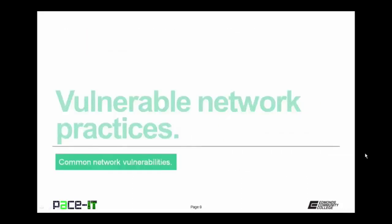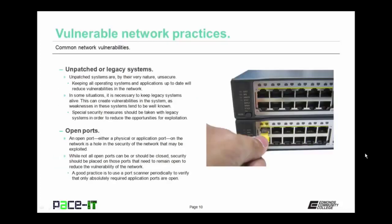Now it's time to talk about vulnerable network practices. First up are unpatched or legacy systems. Unpatched systems are, by their very nature, unsecure. Keeping all operating systems and applications up-to-date will reduce vulnerabilities and help harden the network against attack. In some situations it is necessary to keep legacy systems alive, which can create vulnerabilities since weaknesses in these systems tend to be well-known. Special security measures should be taken with legacy systems — one of the best steps is placing them on their own network or on their own virtual local area networks.